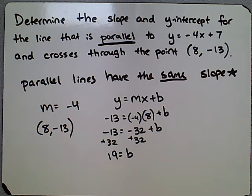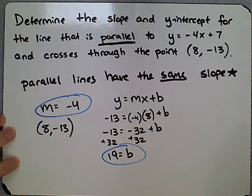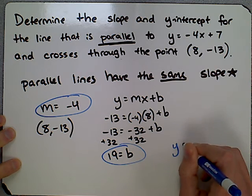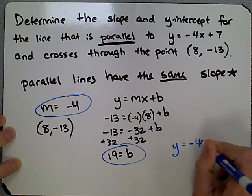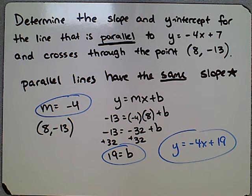So again, recall at this point, we need a slope and a y-intercept to write an equation. We're going to use both of those. Y equals -4x plus 19 is going to be our final equation for this problem. Here we have parallel lines. This has a y-intercept of positive 7, but our new line has a y-intercept of positive 19.